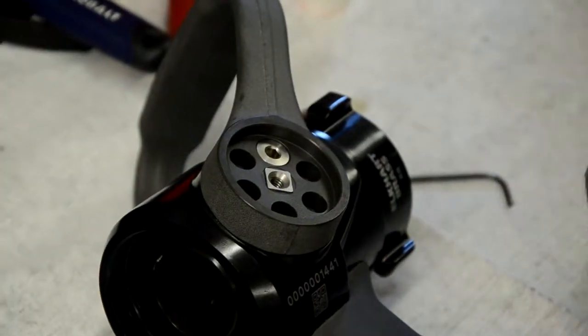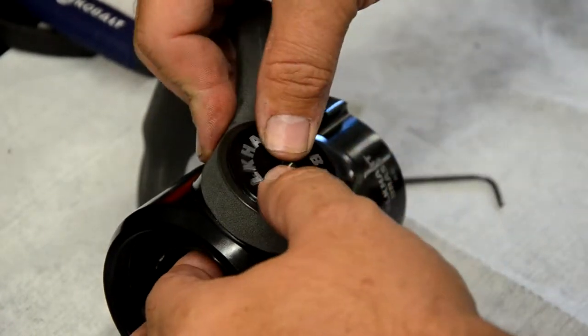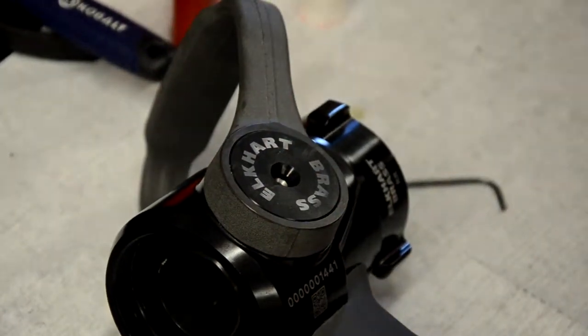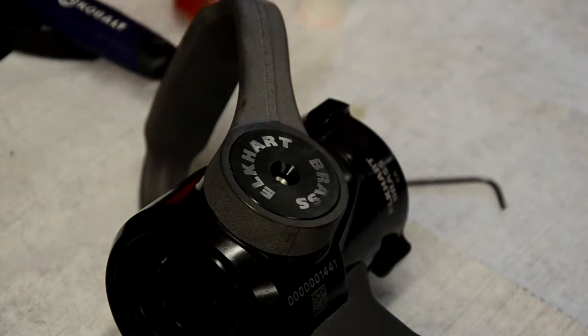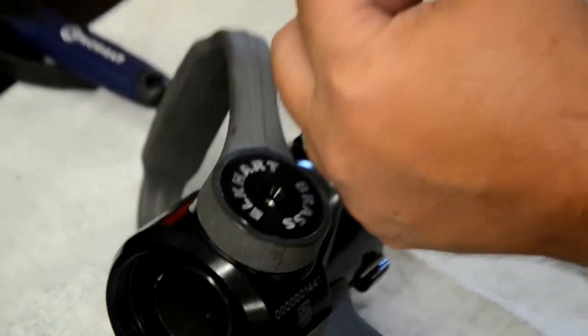Next, put a small amount of Dow Corning number 7 silicone grease inside the bail handle recess where the actuator shaft cover o-ring will contact. Position the bail handle in the open position, align the word Elkhart so that it reads upright, and press the cover into place until it stops.